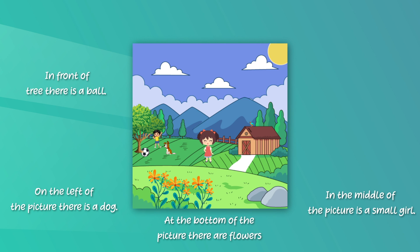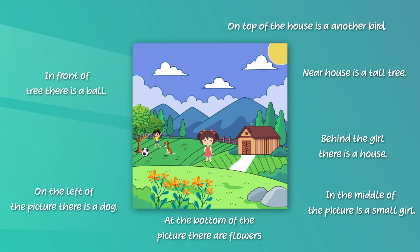Further positional phrases include: 'Behind' — 'Behind the girl there is a house.' 'Near' — 'Near the house is a tall tree.' 'On top of' — 'On top of the house is a bird.' 'Under' — 'Under the tree is a boy.'